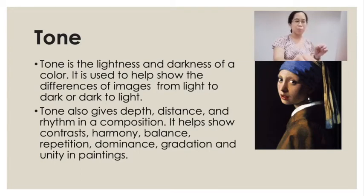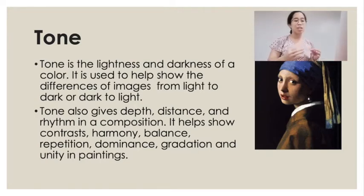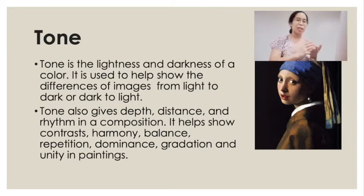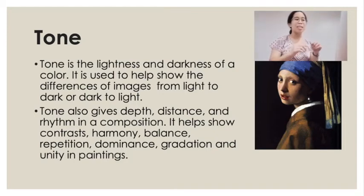And then we have tone. Tone is the lightness and darkness of color. It is used to help show the differences of images from light to dark or dark to light. Tone also gives depth, distance, and rhythm in a composition. It helps show contrast, harmony, balance, repetition, dominance, radiation, and unity in paintings. If you look at your phone's camera editor, you can adjust the tone to be warmer or cooler — tone is important in setting up depth, distance, and composition.